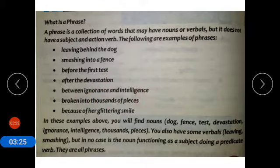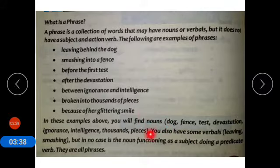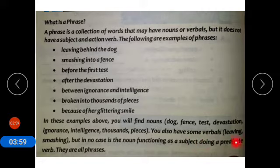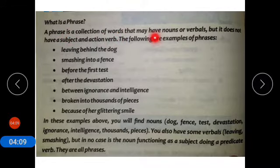In these examples you will find nouns — dog, fence, test, devastation, ignorance, intelligence, thousands, pieces — and verbals like leaving and smashing. But in no case is the noun functioning as a subject doing a predicate word. They are all phrases. A phrase is a collection of words that may have nouns or verbals.